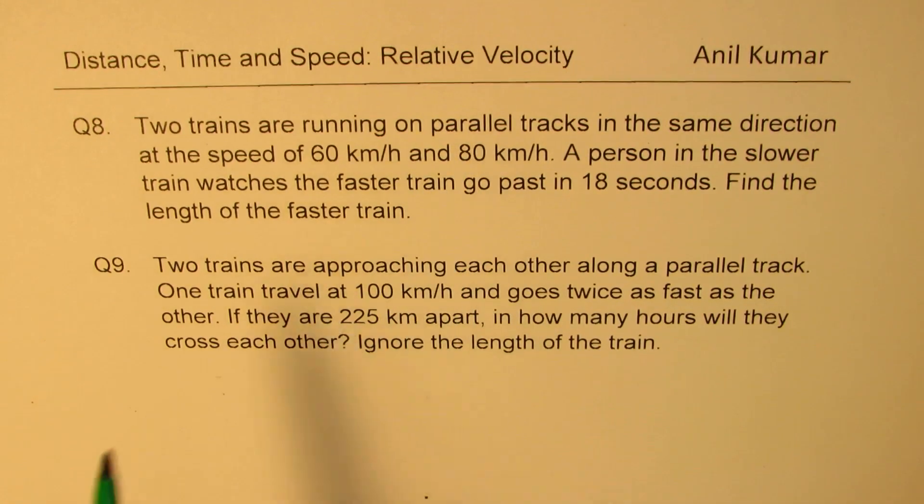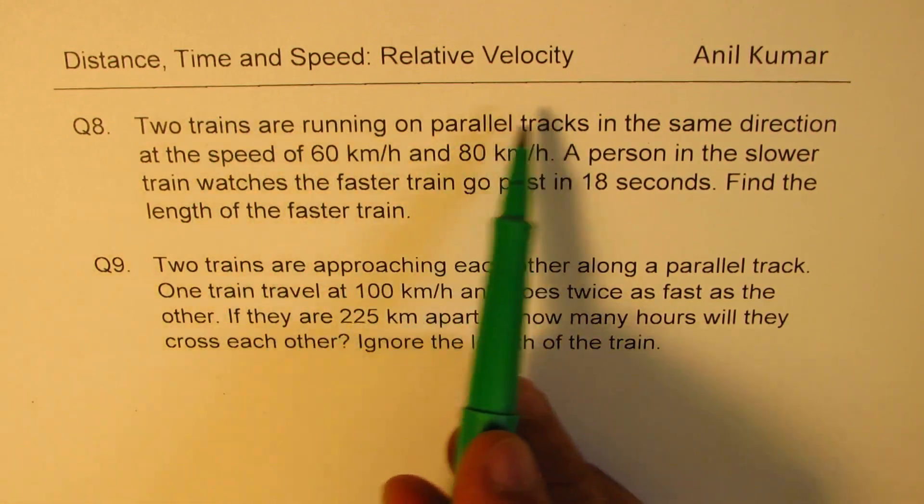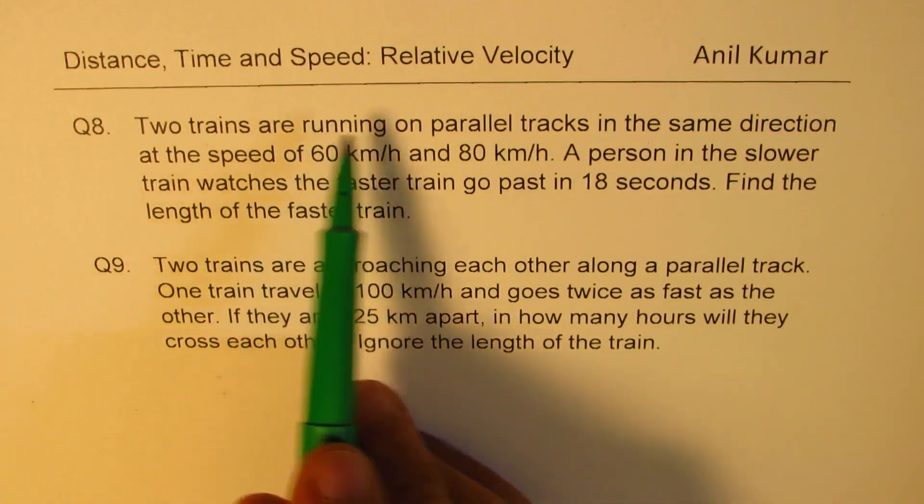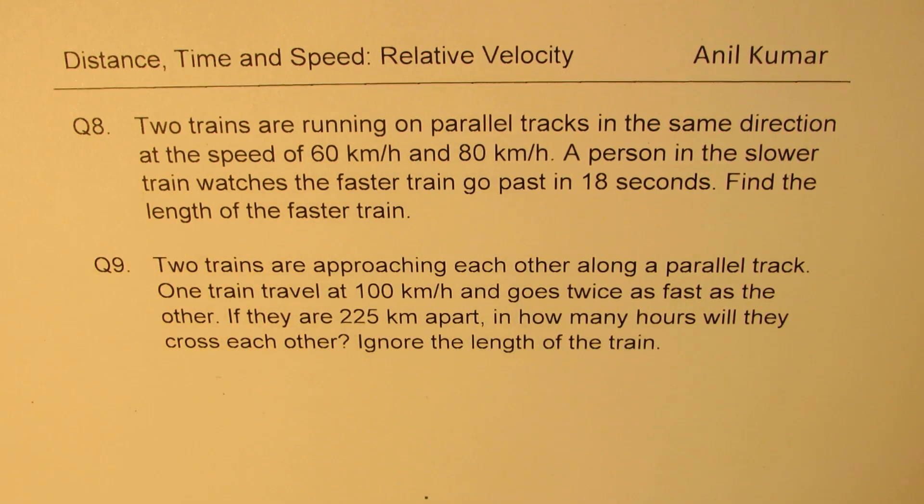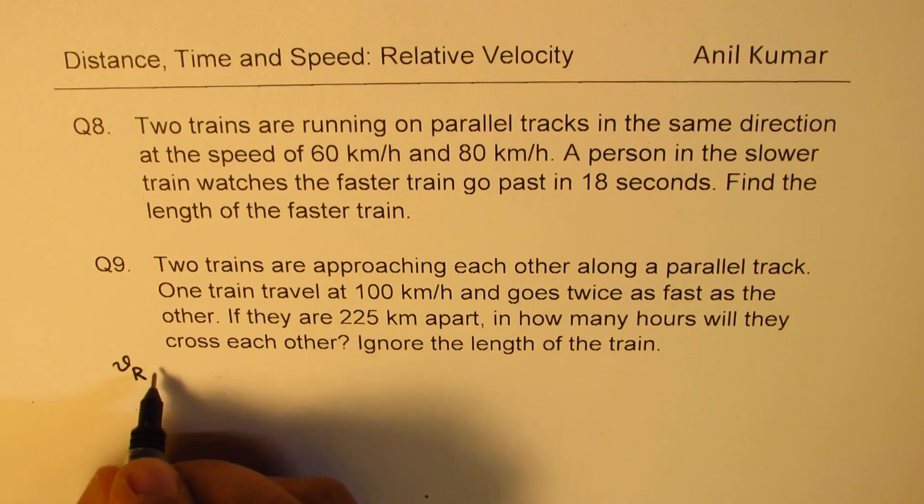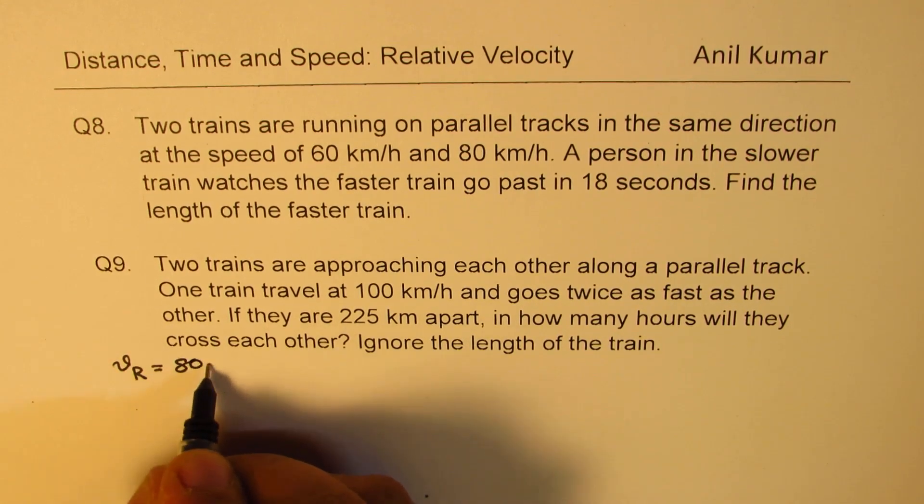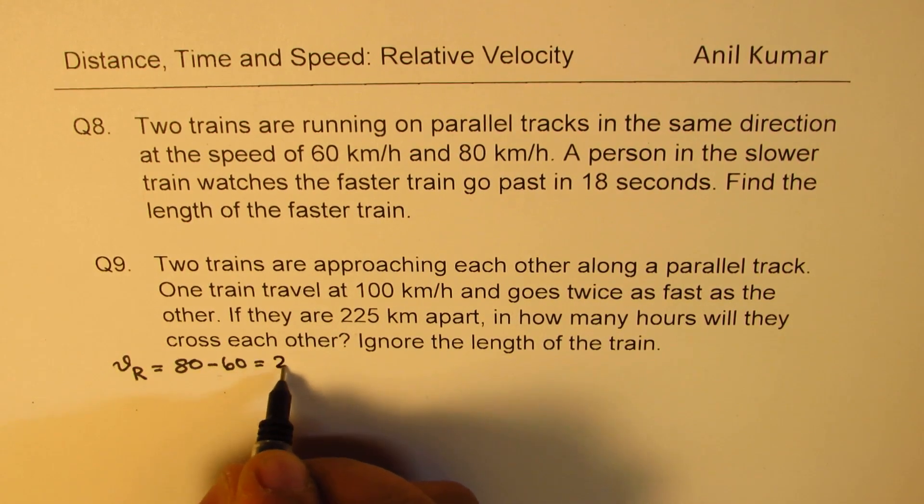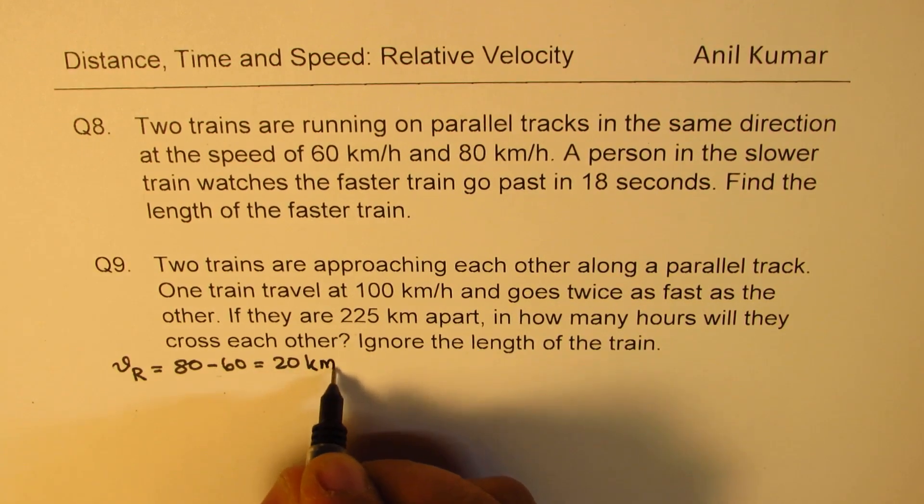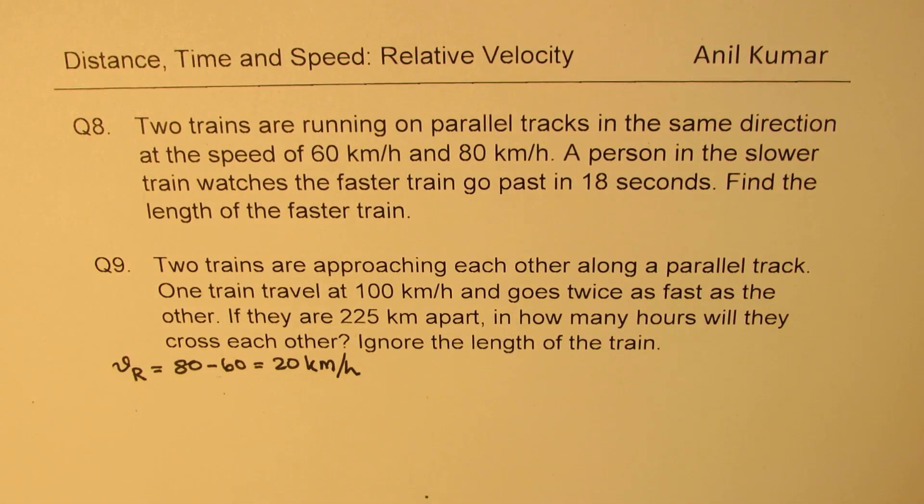Whenever they are traveling in the same direction, relative velocity is lesser. That is important to understand. So the relative velocity is actually 80 minus 60, which is 20 km per hour. That becomes the relative velocity for us.